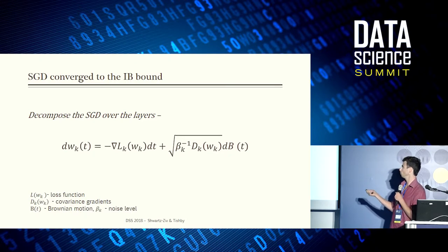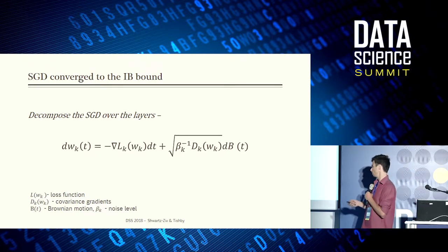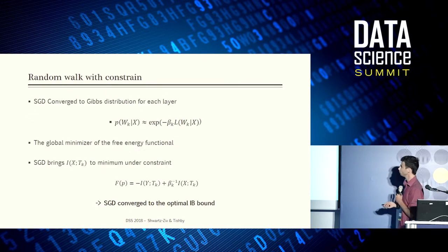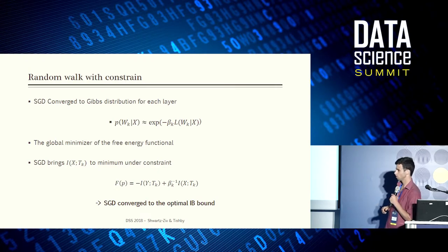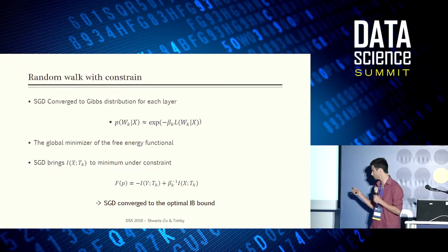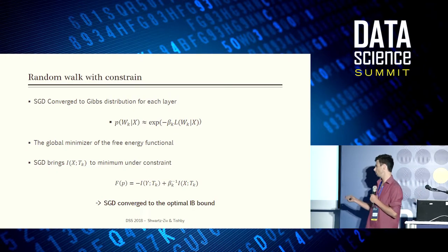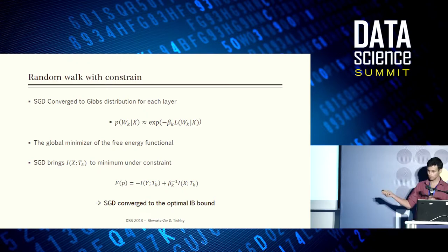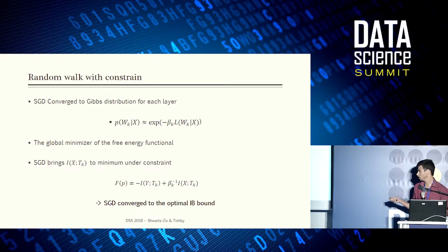Why is this important? Because under some assumptions about the noise in the covariance matrix of the gradients, we can actually prove that it will converge to something called a Gibbs distribution — a random walk with some constraint. This Gibbs distribution is a very famous distribution: it is a minimizer of the free energy. And in our case, the free energy is exactly the information bottleneck bound. So at the end, we get that the SGD will actually converge to the optimal information bottleneck bound, and in the second phase — when we have high noise — we will compress our representation.